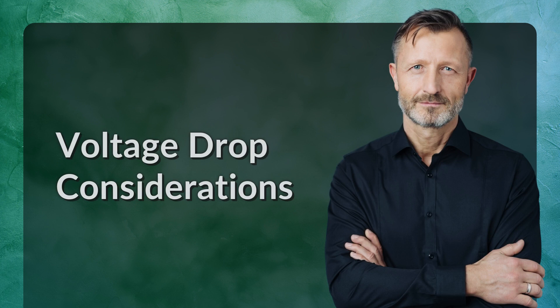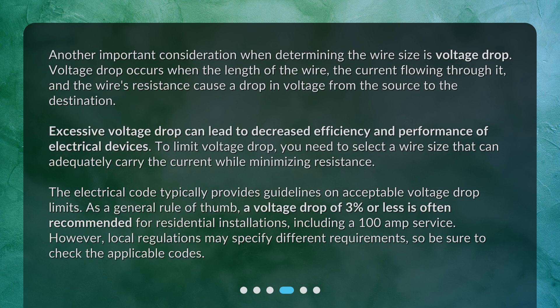Voltage Drop Considerations. Another important consideration when determining the wire size is voltage drop. Voltage drop occurs when the length of the wire, the current flowing through it, and the wire's resistance cause a drop in voltage from the source to the destination. Excessive voltage drop can lead to decreased efficiency and performance of electrical devices. To limit voltage drop, you need to select a wire size that can adequately carry the current while minimizing resistance. The electrical code typically provides guidelines on acceptable voltage drop limits. As a general rule of thumb, a voltage drop of 3% or less is often recommended for residential installations, including a 100 amp service. However, local regulations may specify different requirements, so be sure to check the applicable codes.